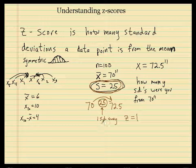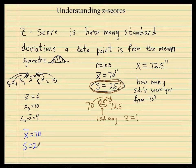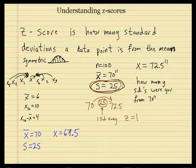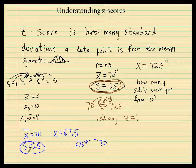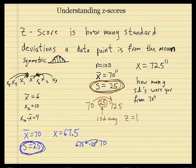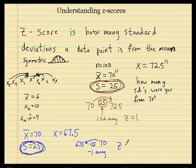Let's try another one — I'll make these fairly simple. Same setup: x-bar was 70 and the standard deviation is 2.5. Let's say you came in at 67.5. So you're going to ask, if this is 70, how far were you away from the mean in terms of standard deviations — how much variance was going on with this distribution. You're negative 2.5 away, so your z-score would be negative 1.